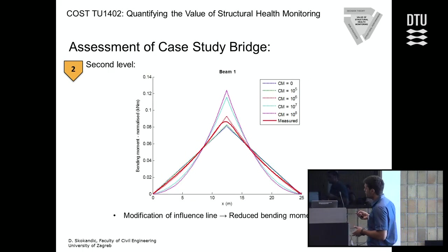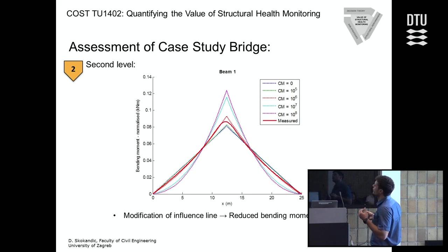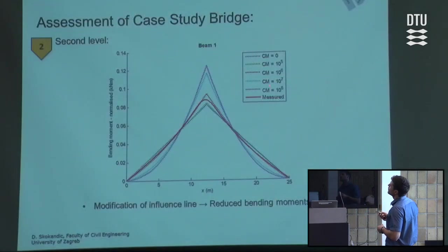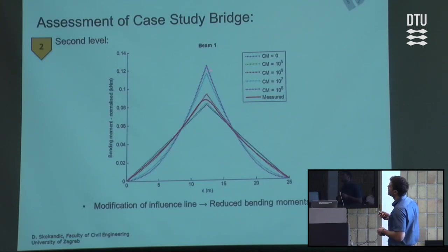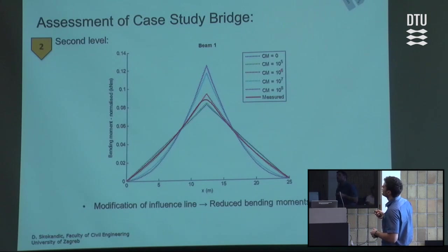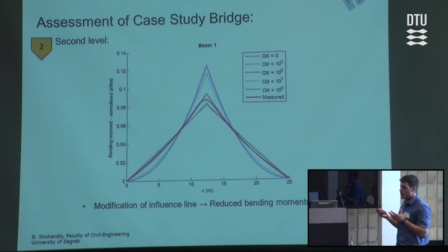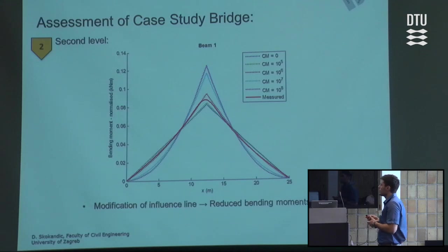We modified our existing model by adding rotational stiffness to the springs in several iterations to match the measured influence line. We tested multiple values of rotational stiffness — referred to as CM in Sophistic — and selected the best fit at 10 to the power of 6. With that modification, we obtained reduced bending moments at the middle of the span, giving us smaller bending moments compared to the initial model.